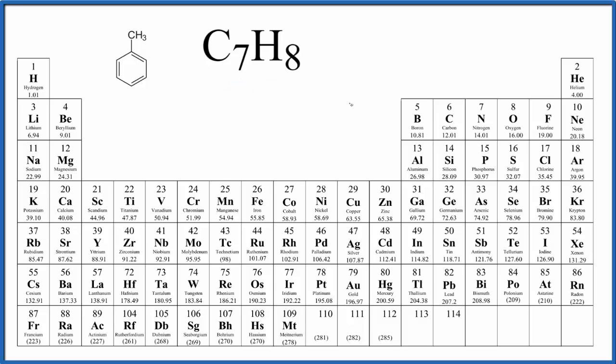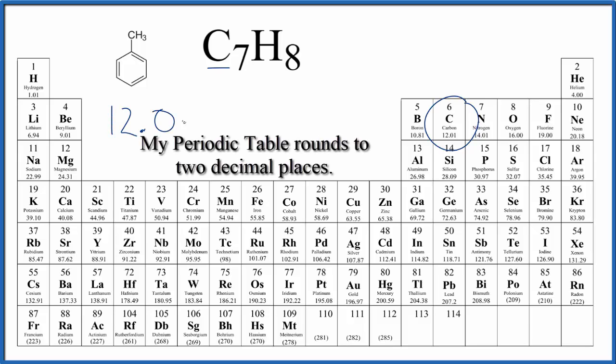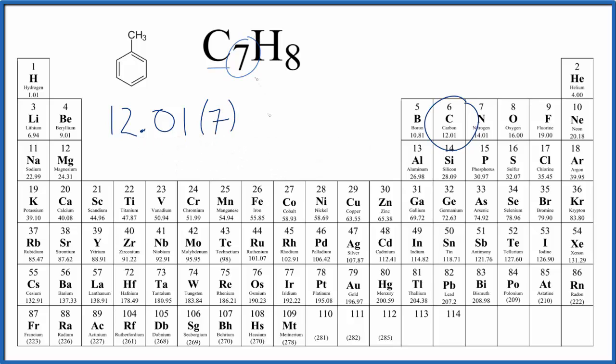Either way, to find the molar mass, it's going to be the same process. We have carbon here, that's 12.01, and the units are grams per mole. I won't write that each time. We have seven carbon atoms, so we need to multiply that by seven, and then we'll add to that. We have hydrogen here,